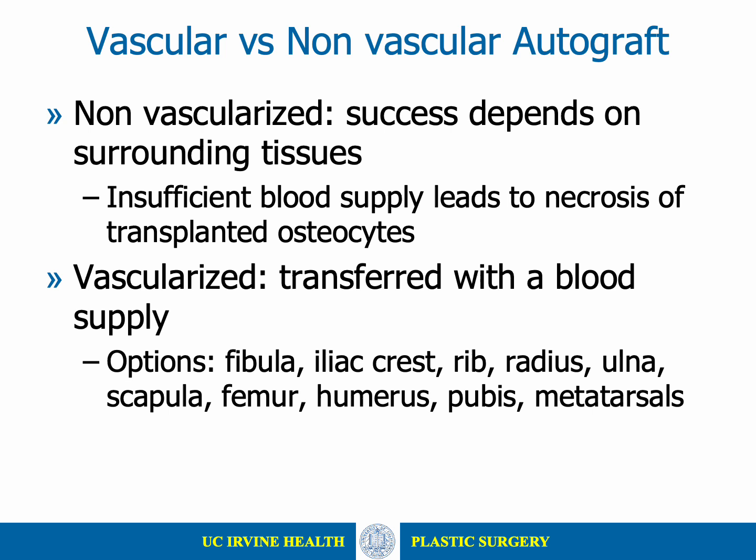Bone grafts can broadly be divided into non-vascularized and vascularized grafts. The success of non-vascularized bone grafting depends on the blood supply of the recipient bone and the surrounding tissues. Without adequate blood supply, non-vascularized grafts are incapable of remodeling, and the transplanted bone can fail to unite with the recipient bone and be subject to necrosis. This is not the case with vascularized grafts, in which the graft is transferred with its own vascular supply. Most cells will remain alive, preserving bone remodeling, and the bone is able to integrate and hypertrophy. In these instances, the graft and recipient bone both show similar healing characteristics to those of a simple fracture.